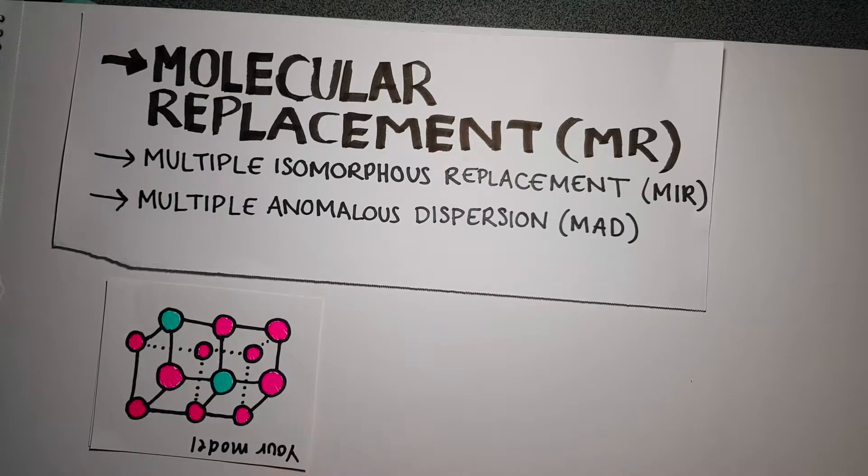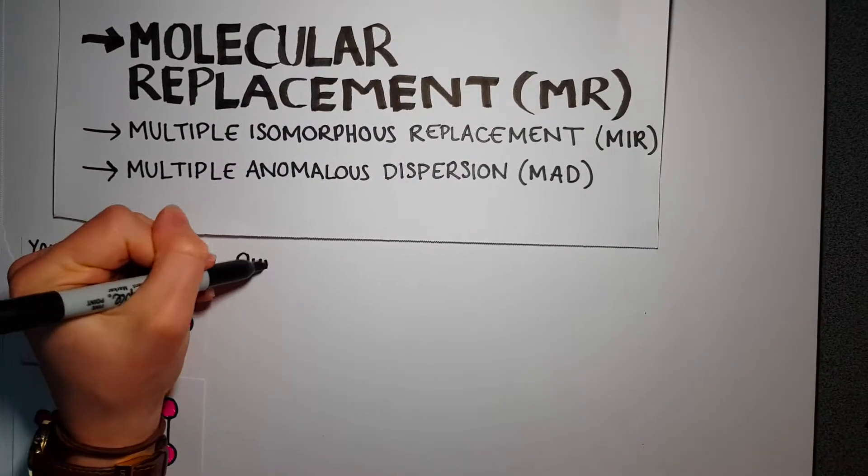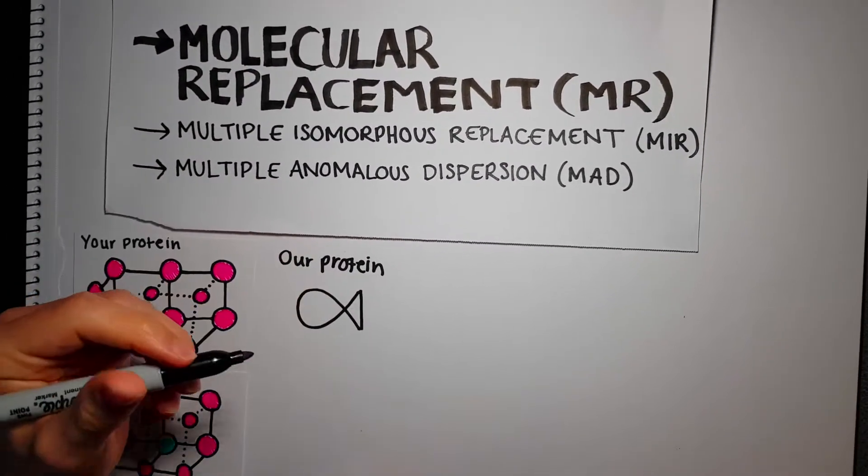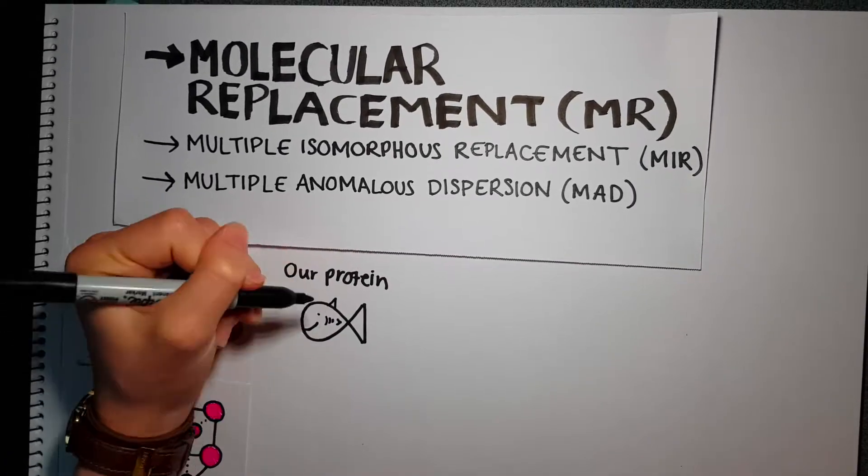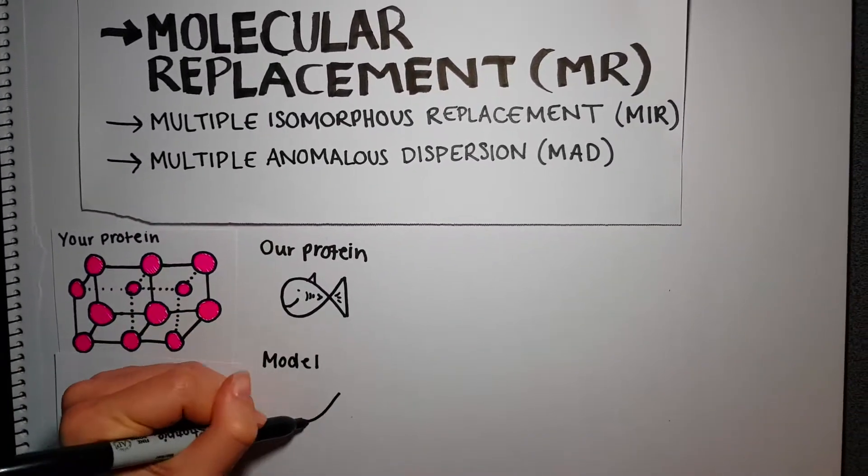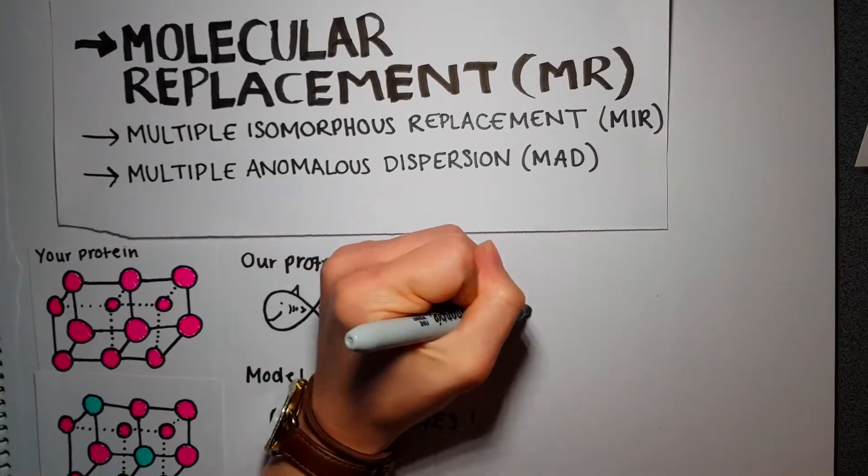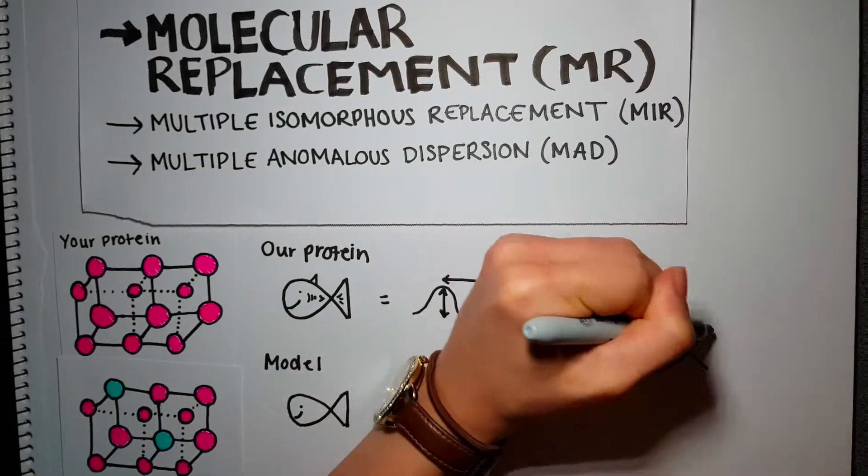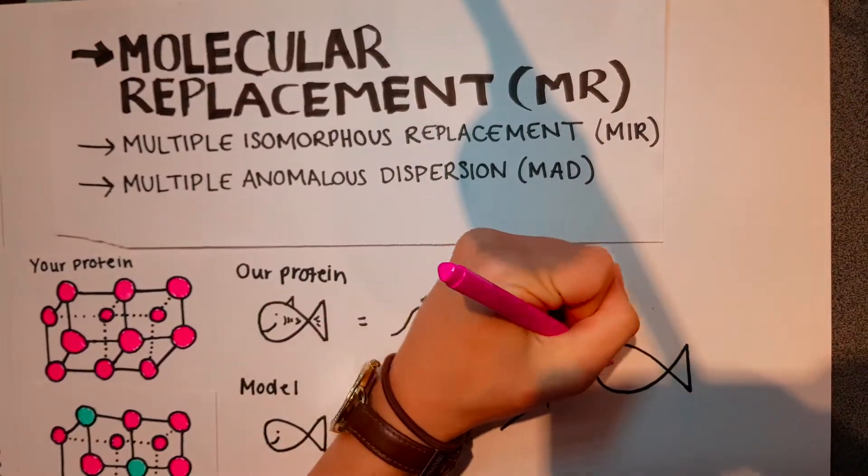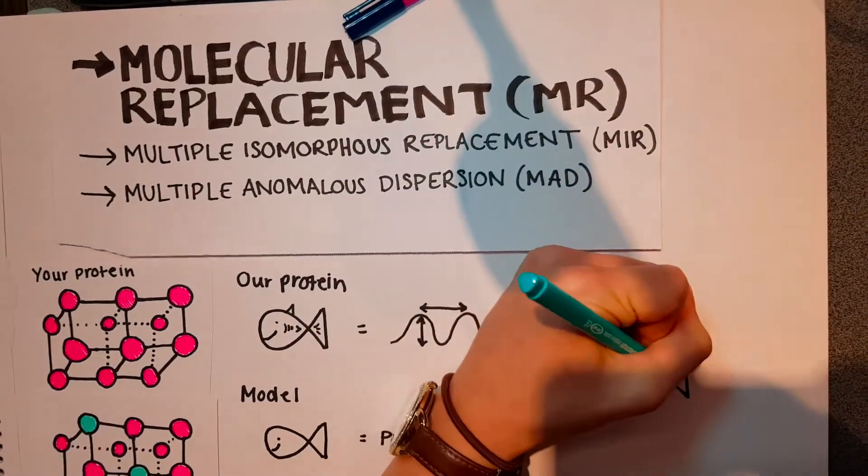Your model now provides the missing phase information. Using these refinement methods is like completing one jigsaw puzzle with parts from another similar puzzle. For example, if our protein resembles a fish with a fin, we can use phases from another type of fish without a fin to reveal our first fish's detailed structure.